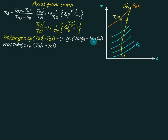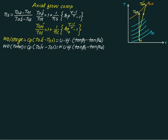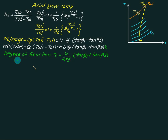Total work done equals n multiplied by U × Vf × (tan β1 minus tan β2), where β1 is the blade inlet angle, β2 is the blade outlet angle, U is the blade velocity, and Vf is the flow velocity. If a work done factor k is provided, include it in the expression; otherwise take k equals 1.